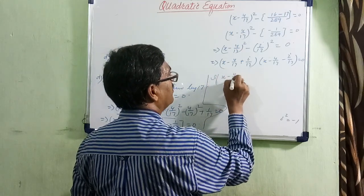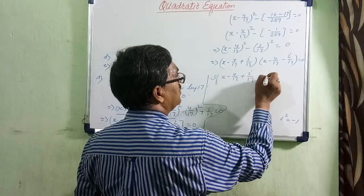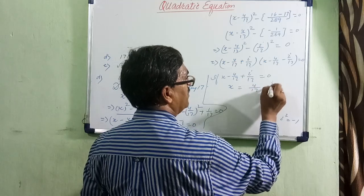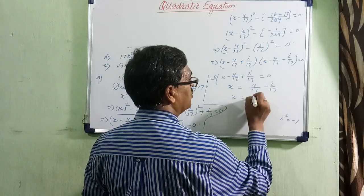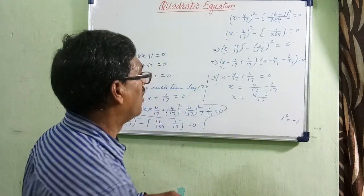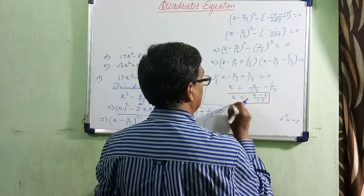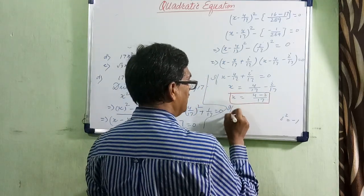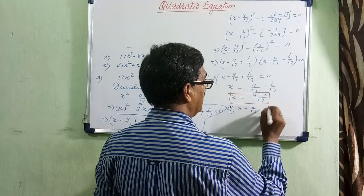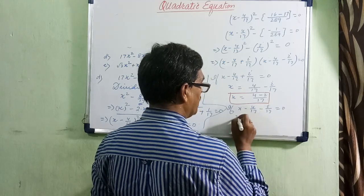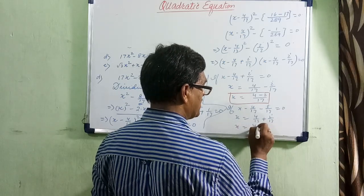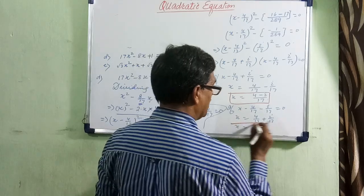If x minus 4 by 17 plus i by 17 equals 0, then x equals 4 by 17 minus i by 17, so x equals 4 minus i all over 17 — this is the first value of x. Similarly, if x minus 4 by 17 minus i by 17 equals 0, then x equals 4 by 17 plus i by 17, so x equals 4 plus i all over 17 — that is the second value.